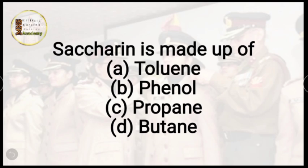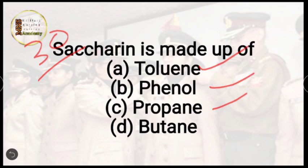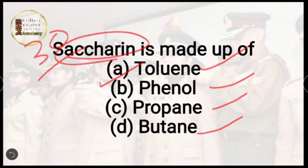Question number 30: saccharin is made up of — toluene, phenol, propane, or butane? The correct answer is option A, toluene. Saccharin is an artificial sweetener, also called a non-nutritive sugar, because it contains no calories or carbs. People who have diabetes or want to reduce fat consume this type of sugar.